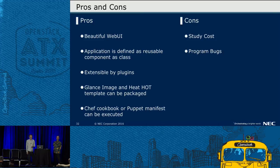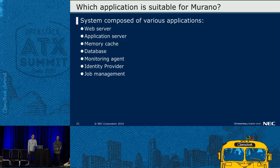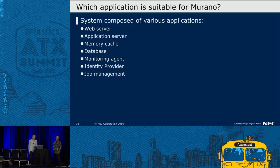On the other hand, disadvantages of using Murano are: first, since there are few documents, studying Murano has a steep learning curve. And Murano programming language is actually a programming language, so bugs are inevitable. Which application is suitable for Murano? Systems composed of various applications are suitable for Murano — for example, web server, application server, memory cache, database, monitoring agent, identity provider, and job management.